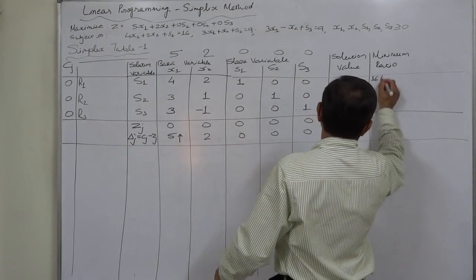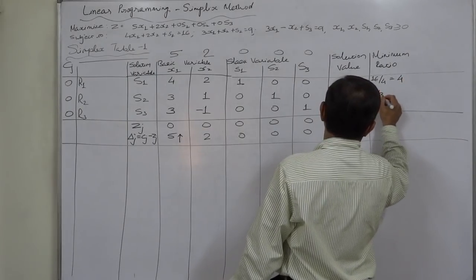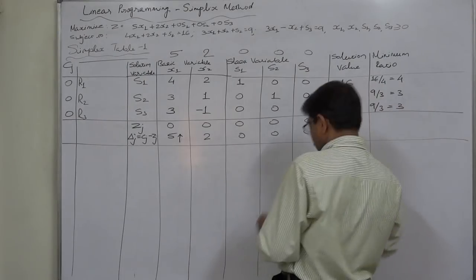Divide the solution values by the respective element of key column that will give us replacement ratio or minimum ratio. 16 divided by 4 equals 4, 9 divided by 3 equals 3, again 9 divided by 3 equals 3.